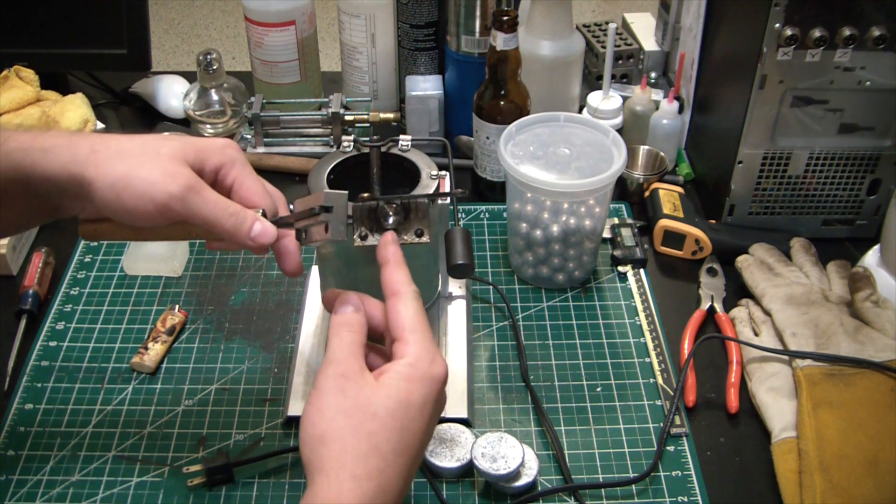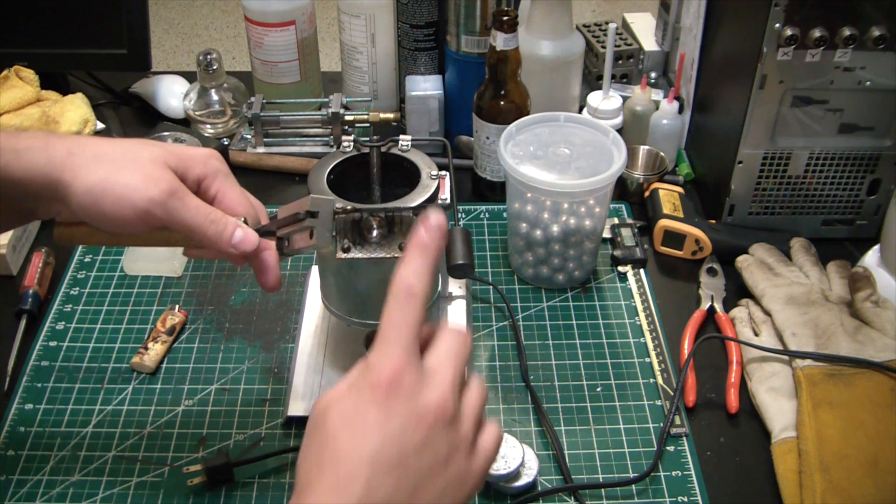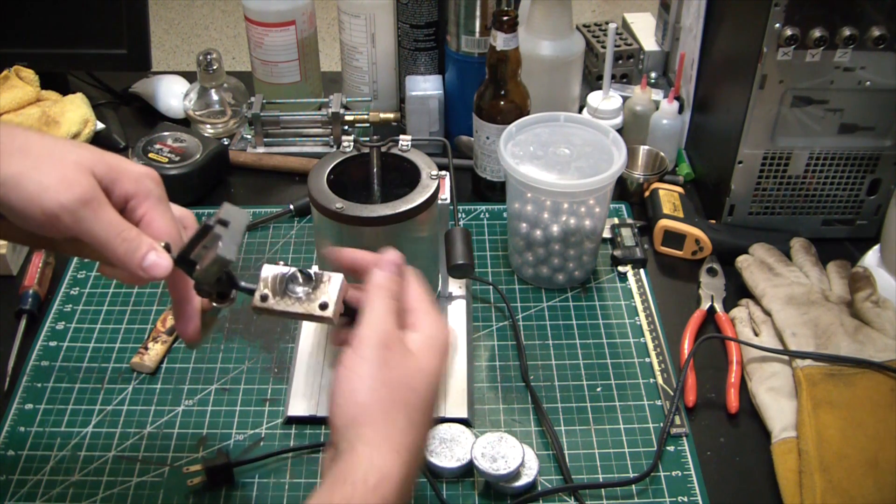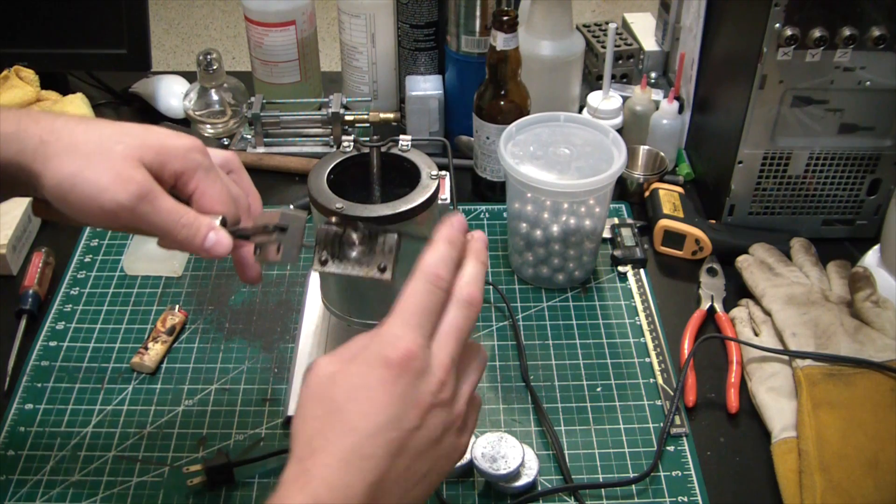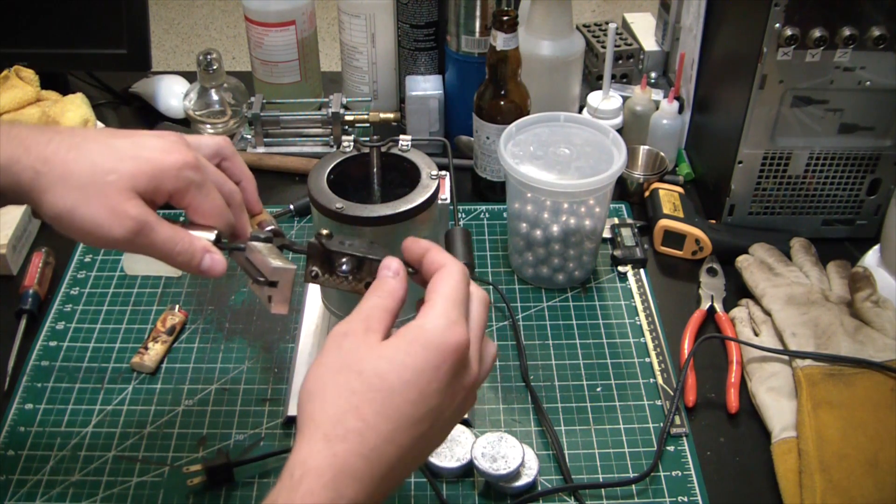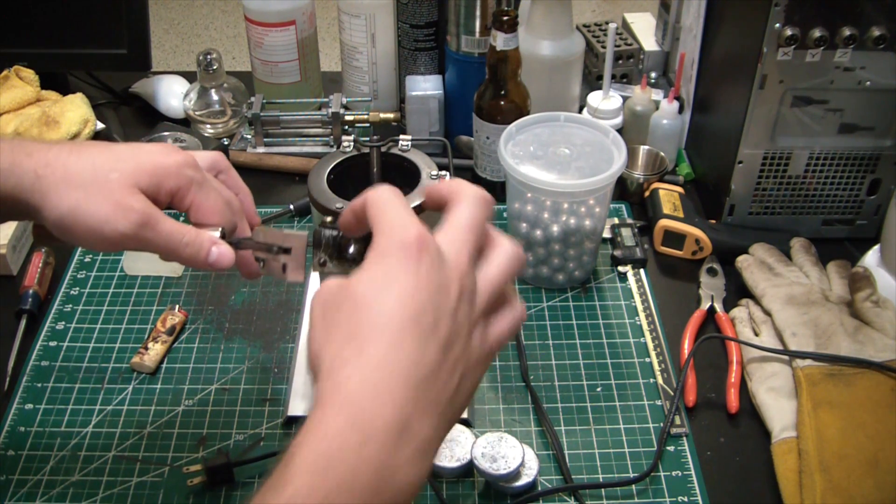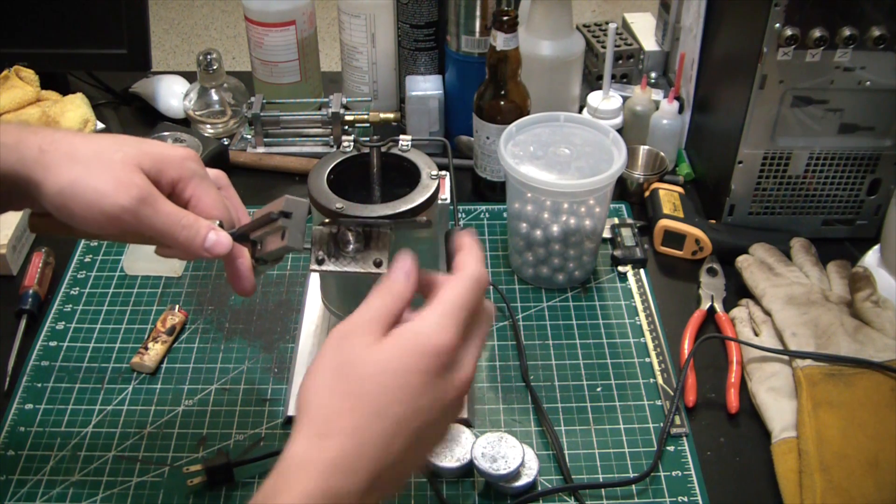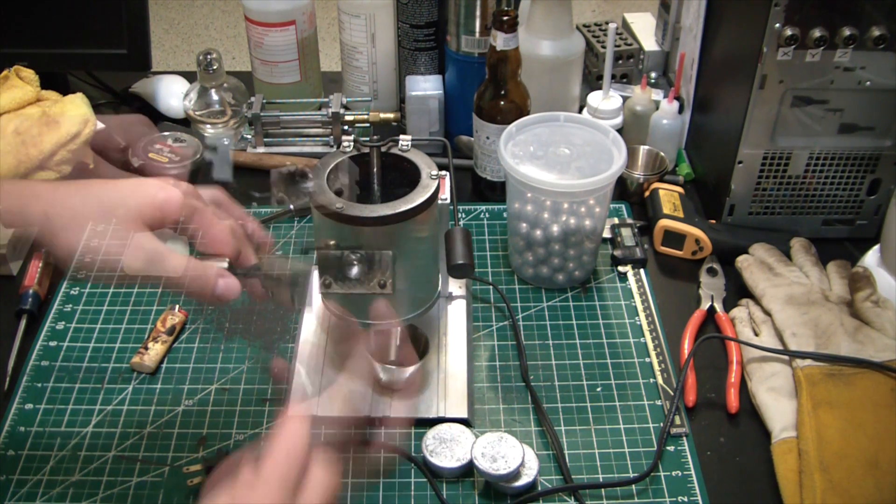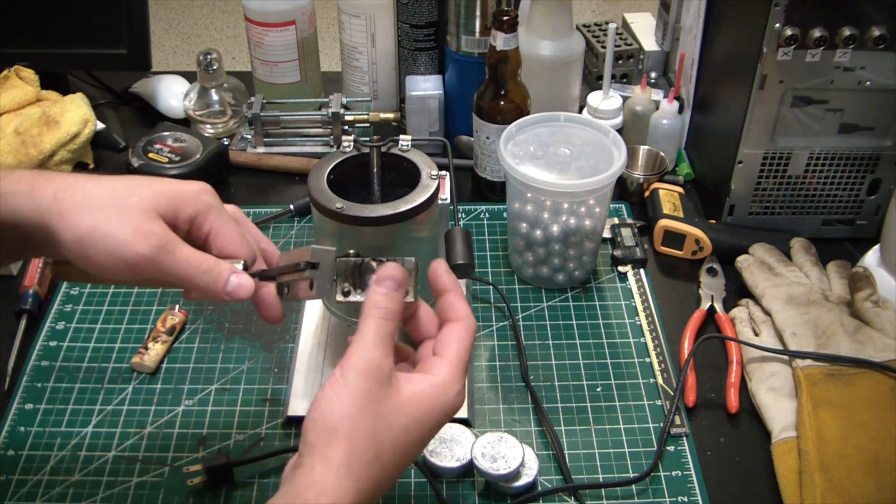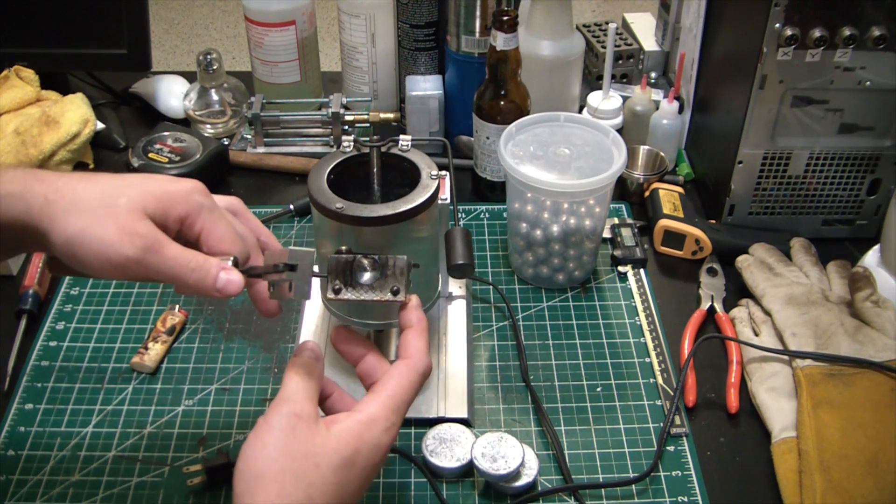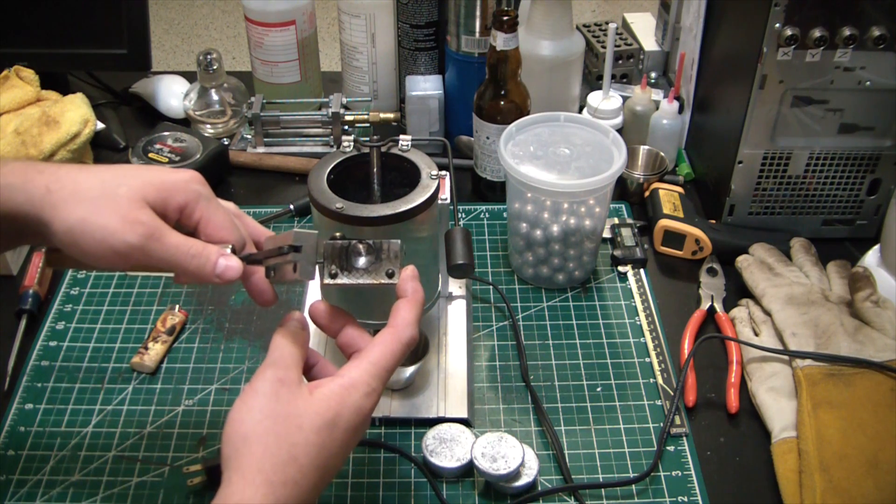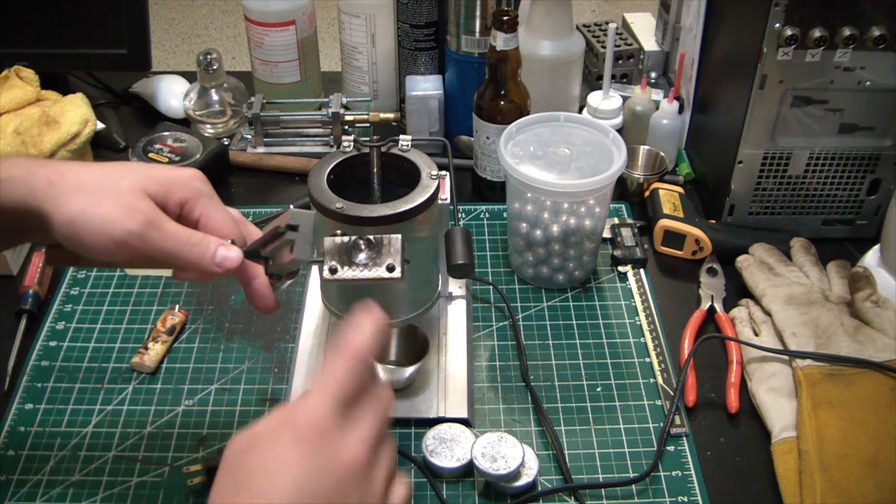Once you actually get this cast and it solidifies, you give that a good tap with a hammer or a wooden dowel or whatever, and that breaks the little connecting piece called the sprue. So there's a little sprue of lead going up to the top, that cuts it off, and then you're just left with a nice round lead ball. It's really that simple. The big trick with these is basically lubricating them properly and prepping the mold for use.